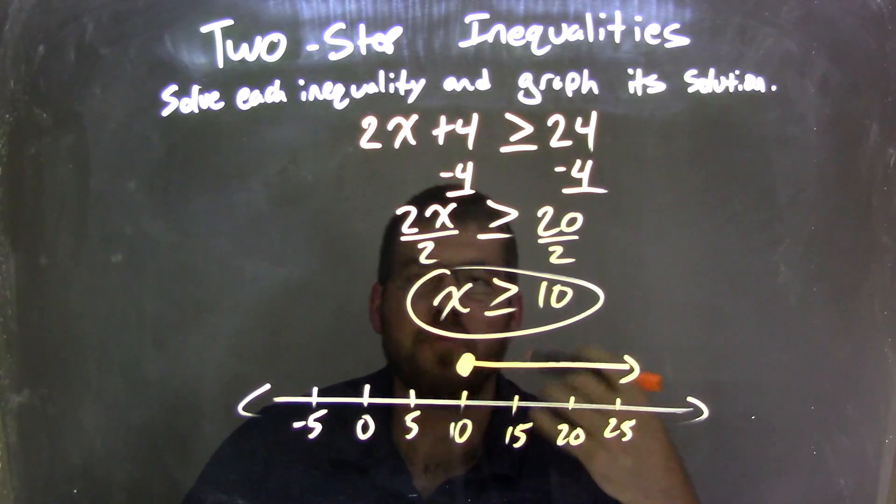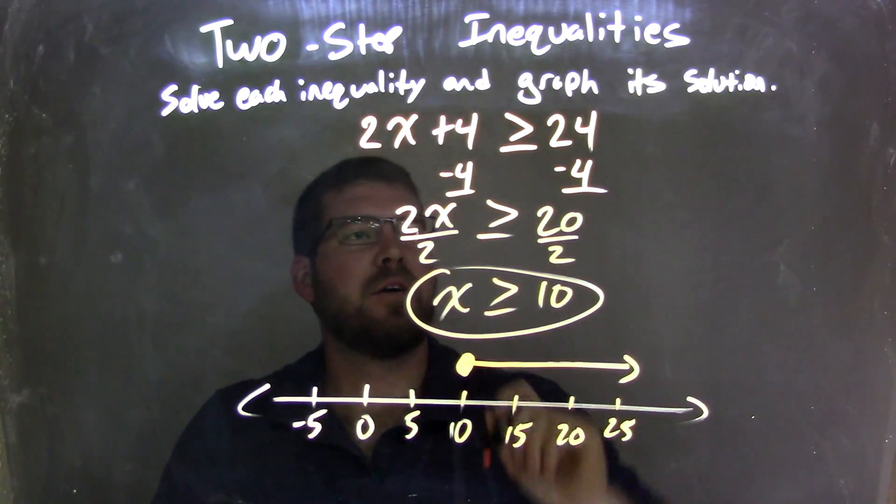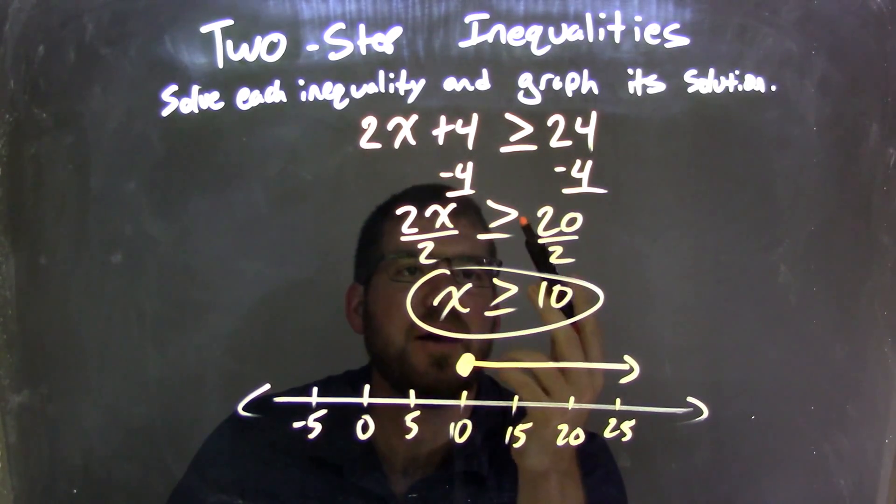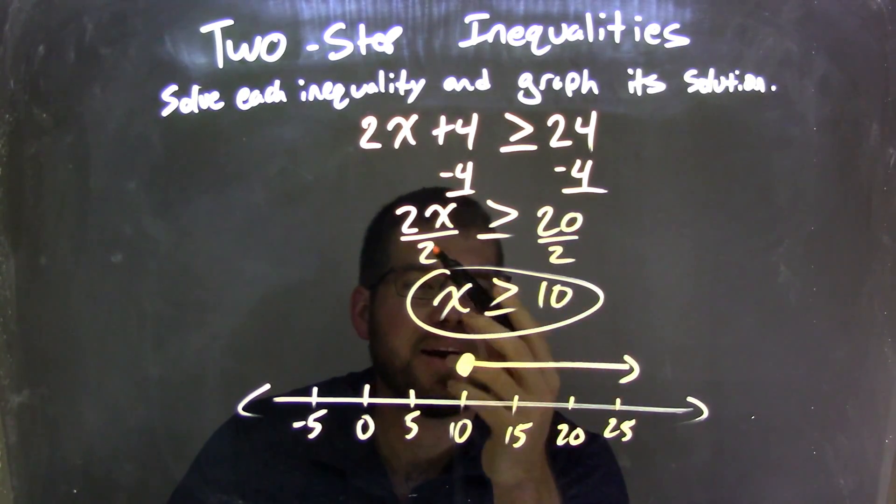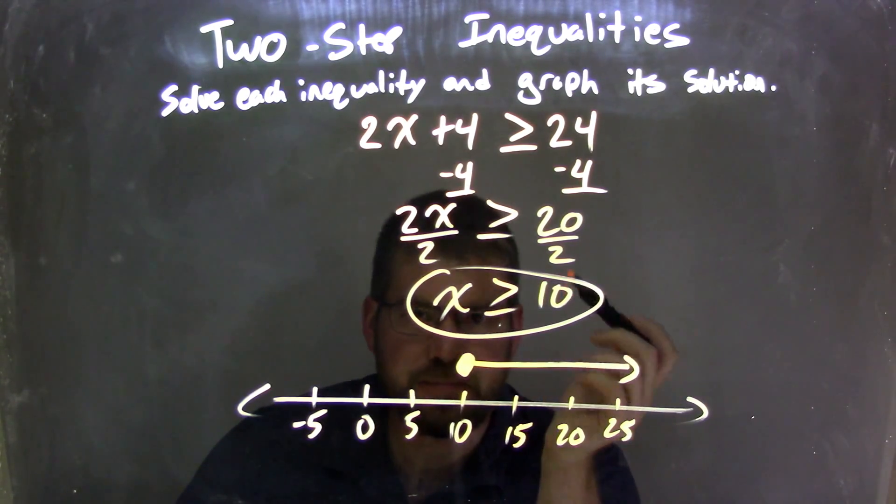So let's go review this. We have 2x plus 4 is greater than or equal to 24. We subtracted 4 from both sides, leaving us with 2x. It's greater than or equal to 20. So then I divided by 2 on both sides, leaving us with x is greater than or equal to 10.